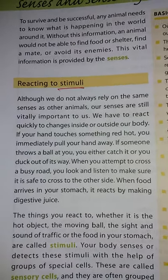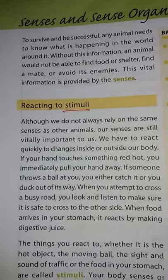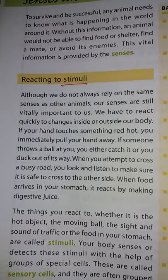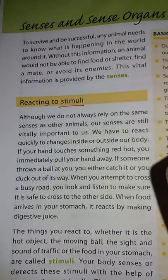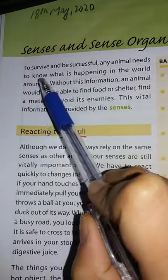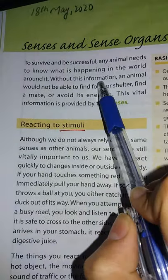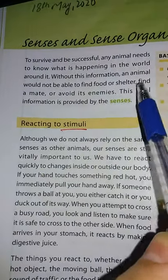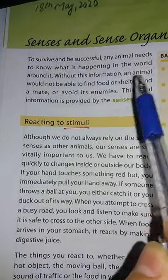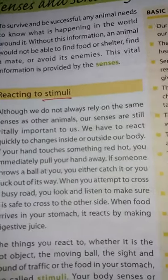To survive and be successful, any animal needs to know what is happening in the world around it. Without this information, an animal would not be able to find shelter or food, find a mate, or avoid its enemies. This vital information is provided by the senses. What are the senses?